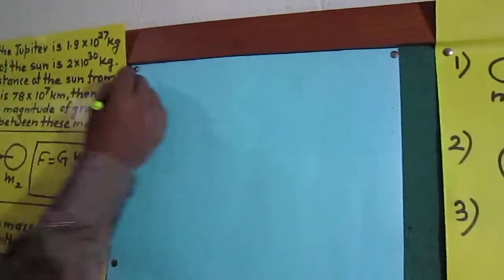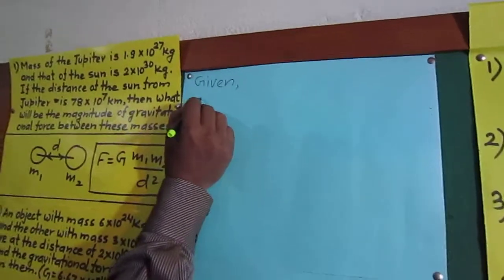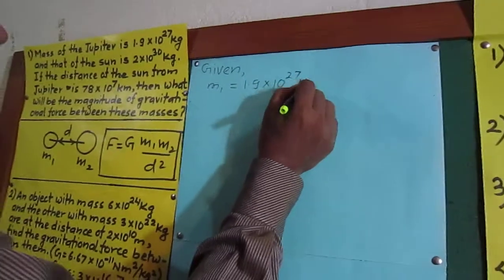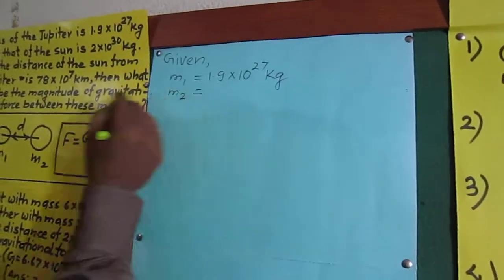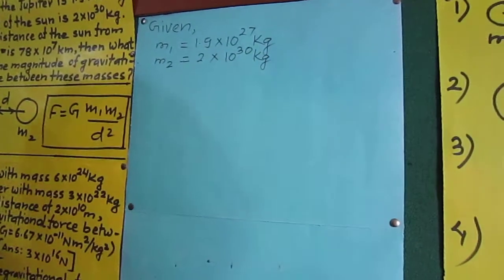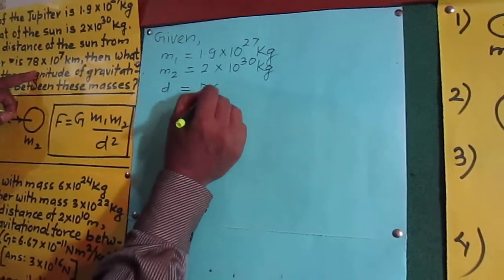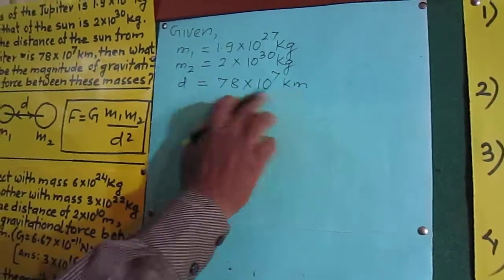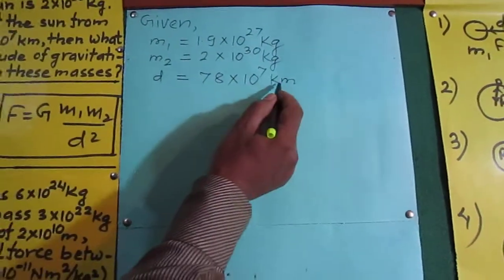The given values are: mass of the first body, Jupiter, M1 = 1.9 × 10²⁷ kg; mass of the second body, the Sun, M2 = 2 × 10³⁰ kg; and the distance between them, D = 78 × 10⁷ km. Here we have a slightly different condition — the two masses are given in kilograms but the distance is given in kilometers.